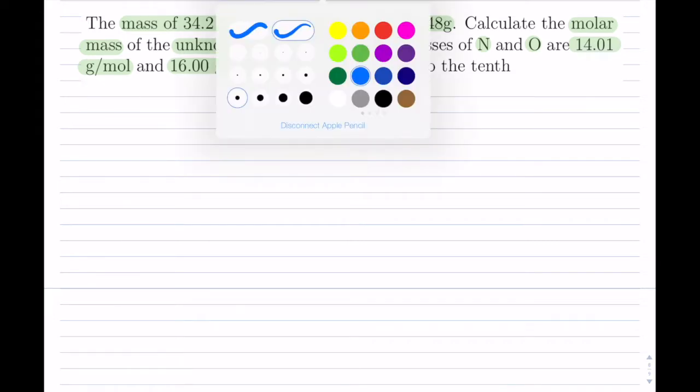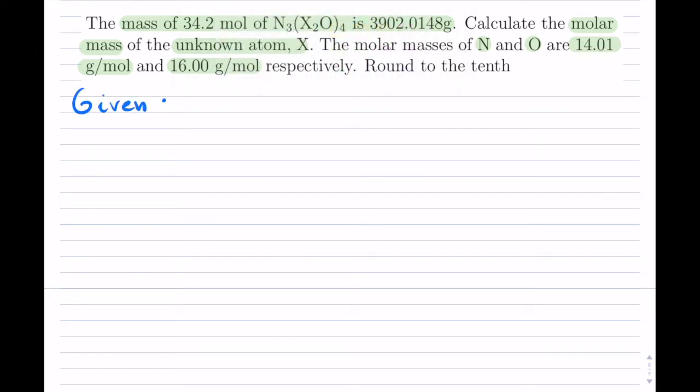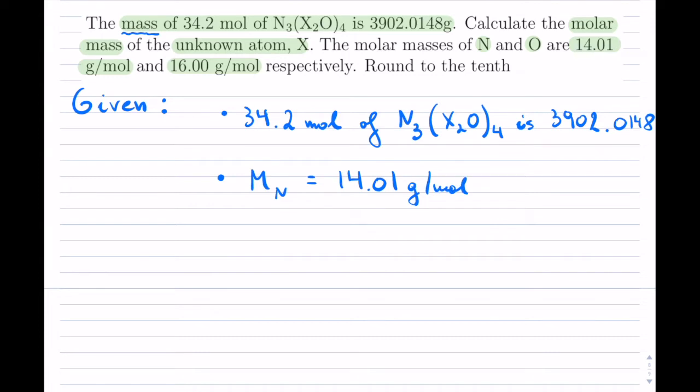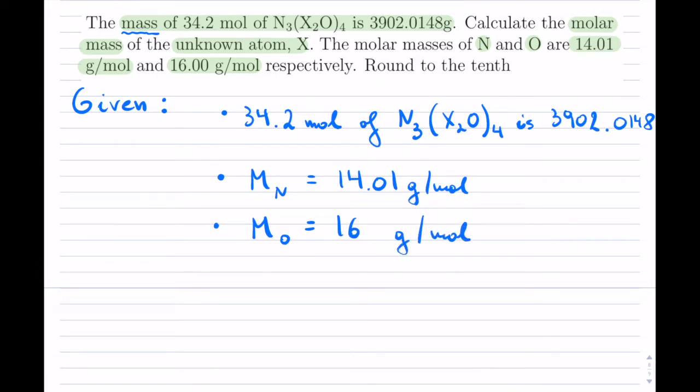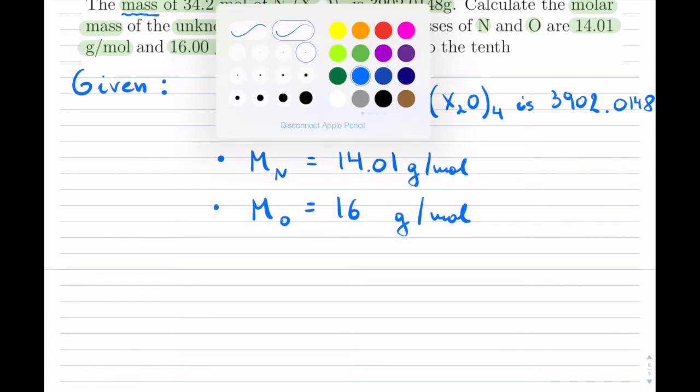So how do we tackle this? Well first of all, we have to provide all the givens. The first given is they give us what the mass is—so we have 34.2 moles of N₃(X₂O)₄ is 3902.0148. That's the mass there.